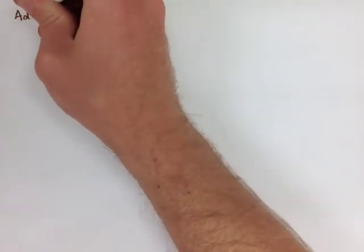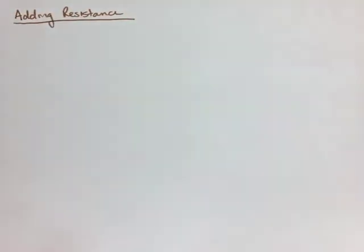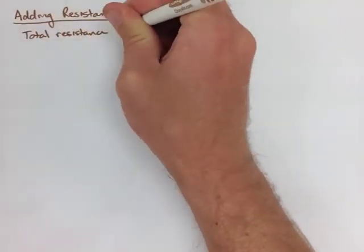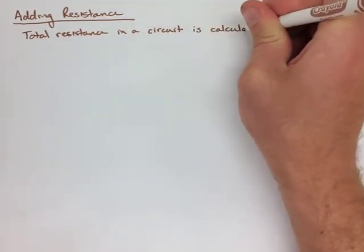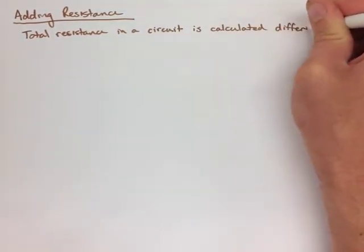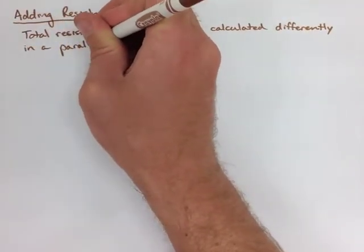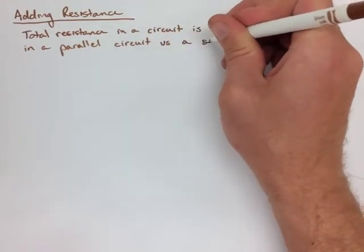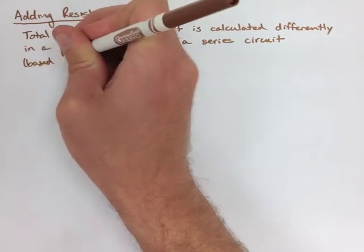The next thing we're going to look at is adding resistance. Now the total resistance in a circuit can be calculated differently in a parallel circuit versus a series circuit based on the properties of electricity. Now these two equations are different but very similar. A series circuit is very easy to add up the resistance. A parallel circuit is far more difficult, and the example we're going to look at deals with a parallel circuit.